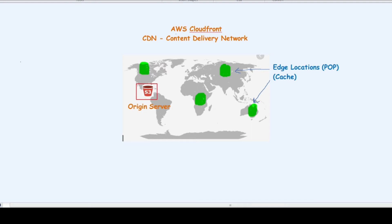AWS CloudFront is a CDN, or Content Delivery Network. What it does is it keeps the contents — in this case, the contents of the website, the source code — and spreads them across different geographical locations. But remember, it doesn't distribute the actual source code; it keeps a cached version of the website. There are three main components in AWS CloudFront.